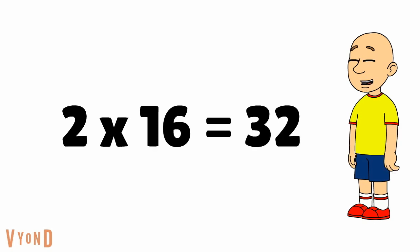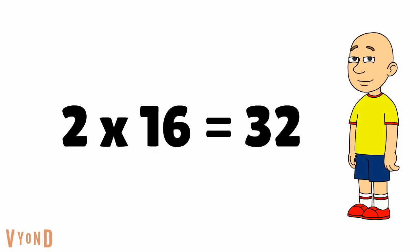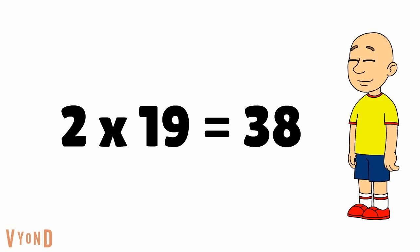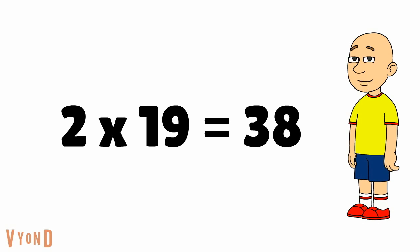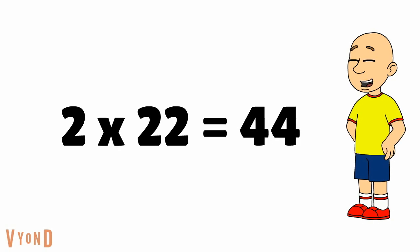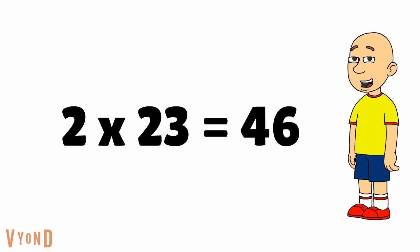2 times 16 equals 32. 2 times 17 equals 34. 2 times 18 equals 36. 2 times 19 equals 38. 2 times 20 equals 40. 2 times 21 equals 42. 2 times 22 equals 44. 2 times 23 equals 46. 2 times 24 equals 48.